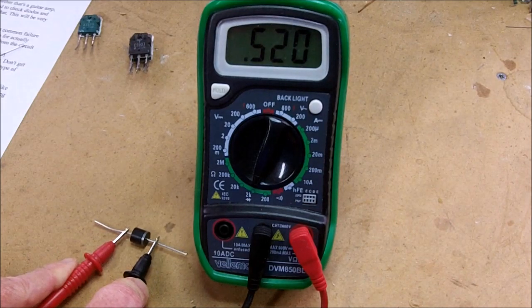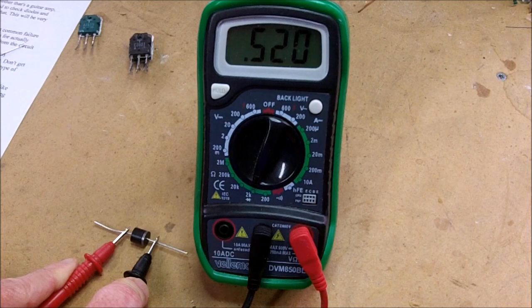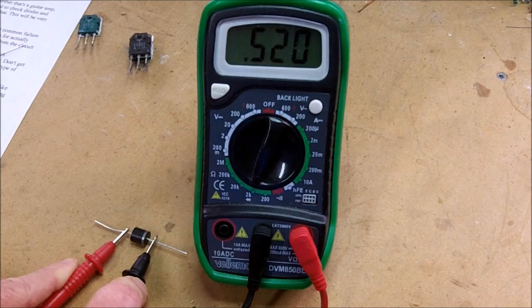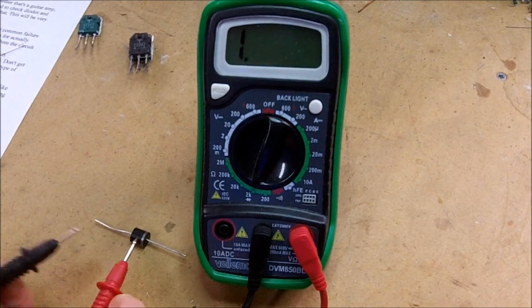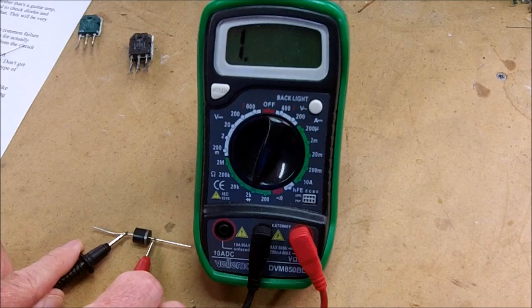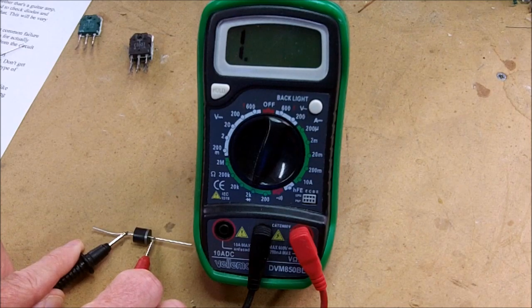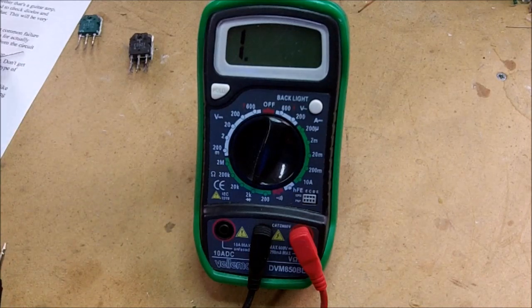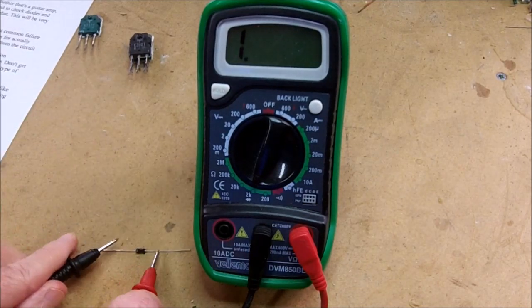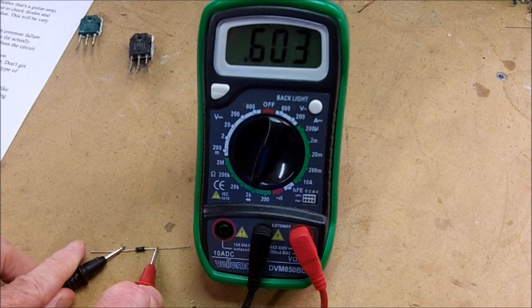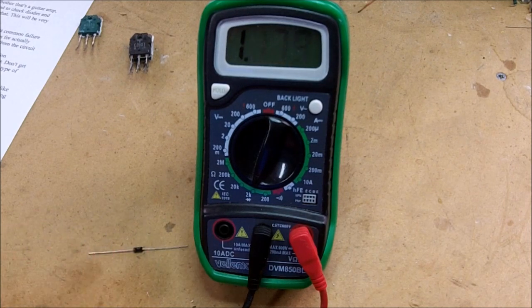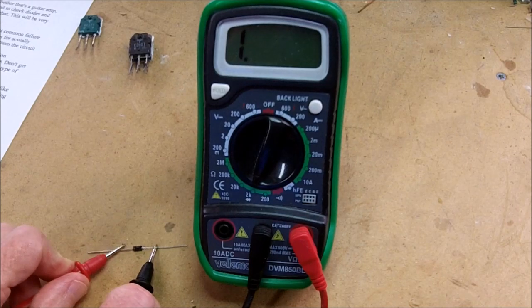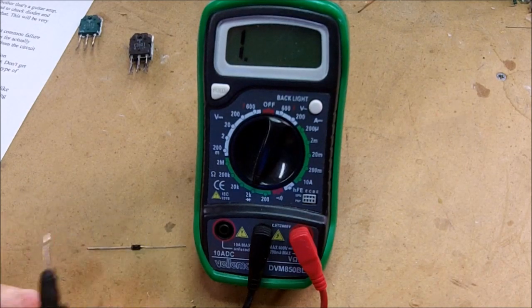And so when I put the probes on the leads of the diode in this direction, it reads 0.520. If we reverse them, we get just a one, which indicates a very high resistance reading. So this diode is good. The very same thing we would do with the smaller one, nothing different. We'd get a low resistance in one direction and a one or a high resistance in the other.